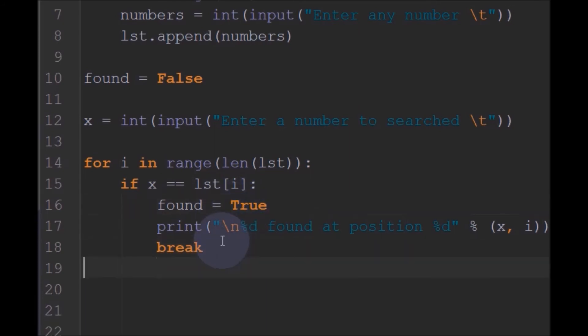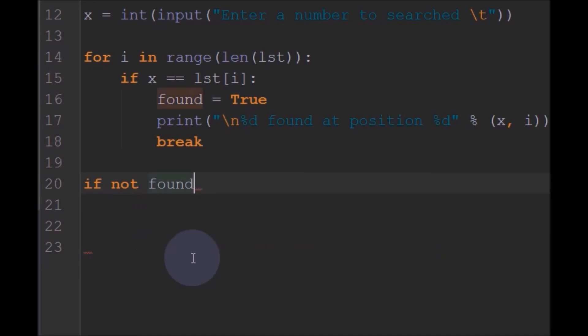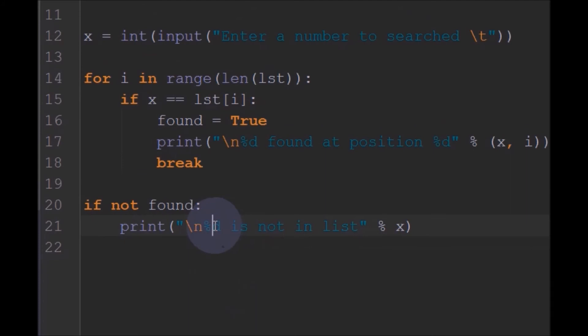So after this for loop, what we will check is if the element is not found in the list, we need to also make a condition for that. So for that I will write if not found. Actually the found is a boolean variable. So not found means if the element is not found, we need to just simply print the element is not found. So I will print the given number is not found in the list. So that's it for the program. Let me save this and run.